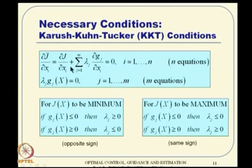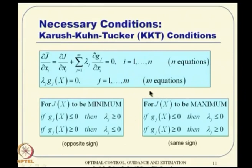The KKT conditions, summarized: ∂J̄/∂xᵢ = 0, and λⱼ · gⱼ = 0. These two equations are used to solve for x and λ. For a minimization problem with constraints gⱼ ≤ 0, λⱼ must be positive. For a maximization problem, λⱼ must be negative. Depending on the problem type and constraint form, you get the appropriate sign convention. You solve these n + m equations, get values for x and λ, then verify whether the constraint equations and corresponding λ conditions are satisfied.